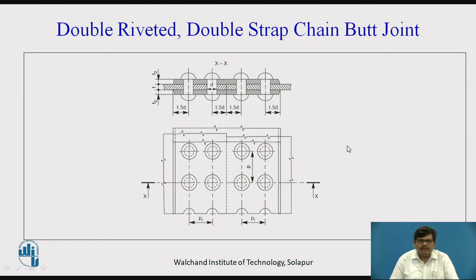Then we have double riveted double strap chain butt joint. Double riveted means two rivet lines pass through a single plate. This is the first plate to be joined and this is the second plate to be joined. We have two cover plates, and through each plate to be joined there are two lines of rivets arranged in chain fashion.